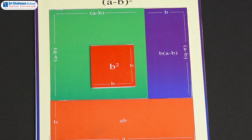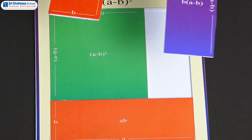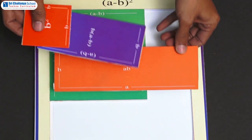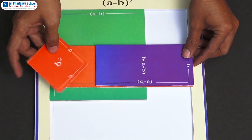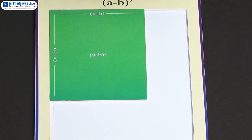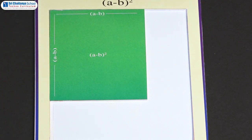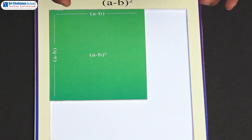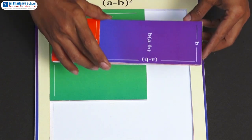Procedure: Now, let us take these two parts and let them coincide on this rectangle. See children, all these three exactly coincide. So, already we know the area of this rectangle is AB square units. The sum of the areas of these two parts are also exactly coinciding, so here also we are having area AB square units.